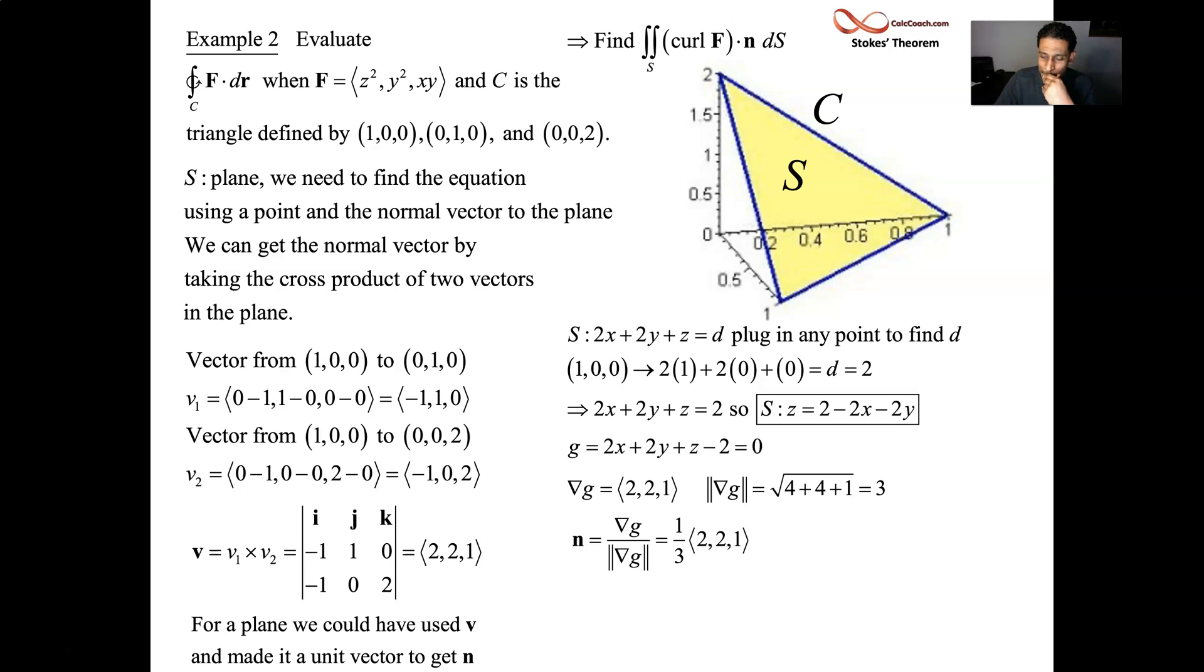All right, great. Next up, we need dS. When your function is given to you explicitly, dS is equal to the square root of the partial with respect to x quantity squared, the partial with respect to y quantity squared, plus a 1, and we take the square root of all of that, and it's multiplied by dA. That's the formula for explicit formula dS. The partial with respect to x is a negative 2, and the partial with respect to y is a negative 2. So you square those guys, you get 4, so you get the same value. This is not an accident.